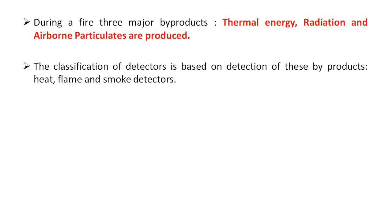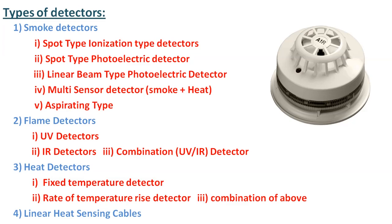During a fire, three major byproducts are produced: thermal energy, radiation, and airborne particles. The classification of detectors is based on detection of these byproducts. Heat detectors are related to thermal energy, flame detectors are related to the radiation emitted during fire, and smoke detectors are related to the airborne particles.